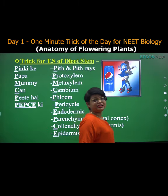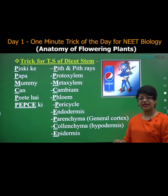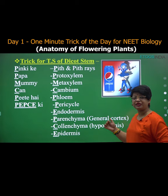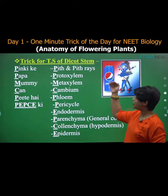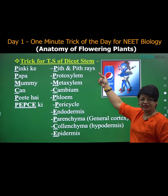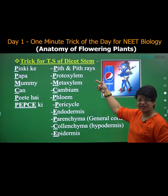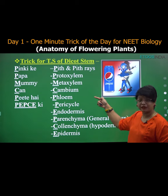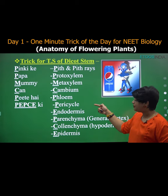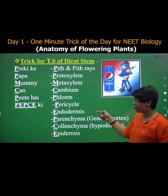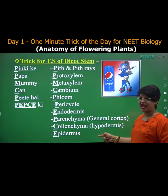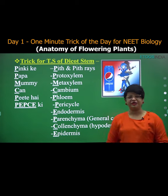So students, you can see here in this diagram, the labeling will be: pith, then protoxylem, then metaxylem, cambium, phloem, pericycle, endodermis, parenchyma, colenchyma, and epidermis.